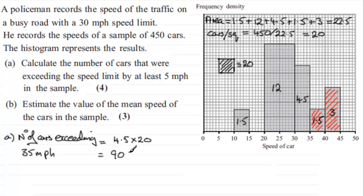Now in part B we've got to work out what the mean speed is, and to work out the mean speed what I need to do is work out the total speed gone by all the cars and then divide that by the total number of cars, 450.